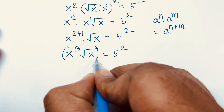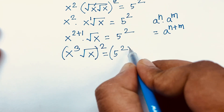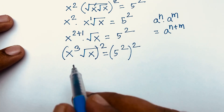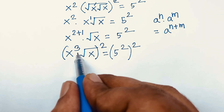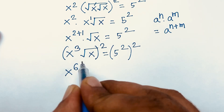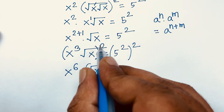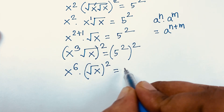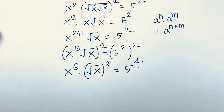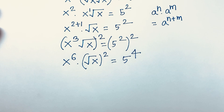I apply the whole square again on both sides. Here the exponent is 3 and we square it, so 2 times 3 gives 6. So I get x to the power 6 times square root x bracket to the power 2, equal to 5 to the power 2 times 2, which is 5 to the power 4.